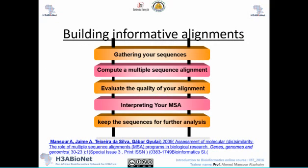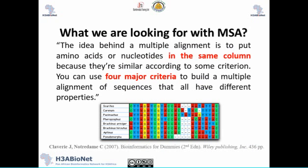For building an informative multiple sequence alignment, these are the steps: first, gather your sequences; then compute the multiple sequence alignment using a good program; after building it, evaluate the quality of your alignment; then move to the interpretation stage; and finally, keep your sequences in a safe place so you can return for further analysis.